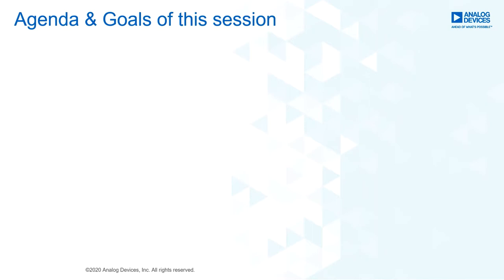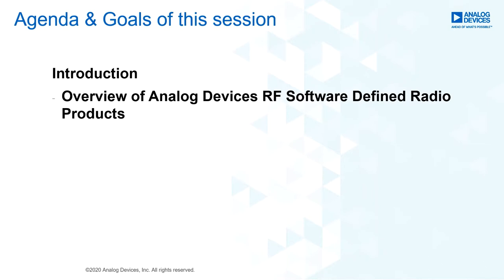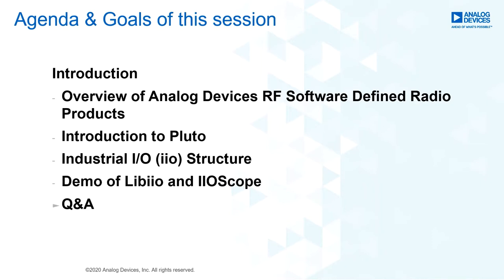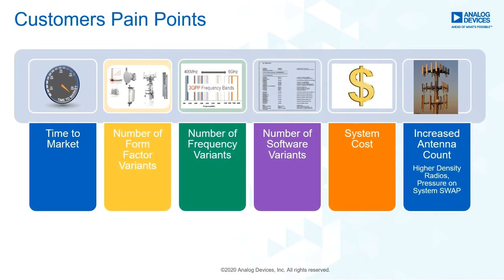In this first session, we'll present Industrial IO as a library framework and how this has evolved into a user-friendly GUI tool, and finally an introduction to using Python with the IIO library. The agenda covers: a brief introduction to ADI's software-defined radio portfolio, an overview of Pluto, the structure of Industrial IO, demos of libiio and IIO scope, and Q&A.